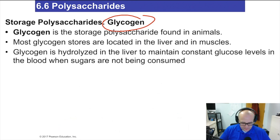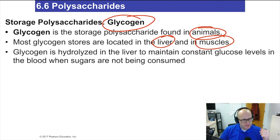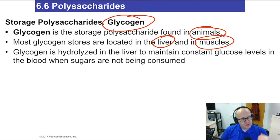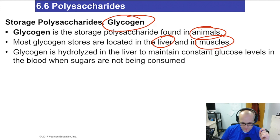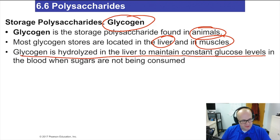Glycogen is another storage molecule for glucose, but this molecule is found in animals, including humans. Glycogen is stored in your liver and in your muscles. Sugar is literally stored in your liver — most likely for quick release to keep the body running smoothly, because you absolutely have to have sugar to operate. Glycogen is hydrolyzed in the liver to maintain a constant glucose level in the blood when sugars are not being consumed. So if you're on a diet and not eating a lot of sugar, the glycogen in your body gets consumed to keep sugar levels at the right level for your body to function. That's what glycogen does — it stores sugar for later use.